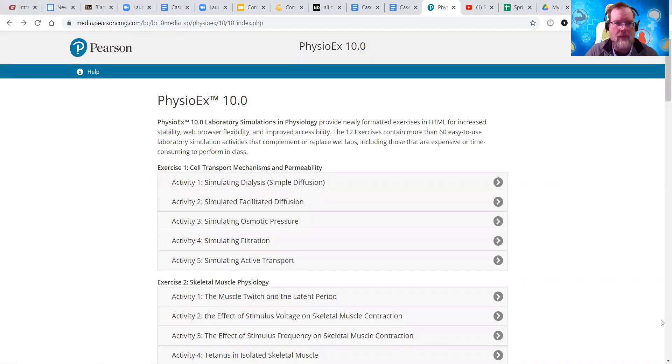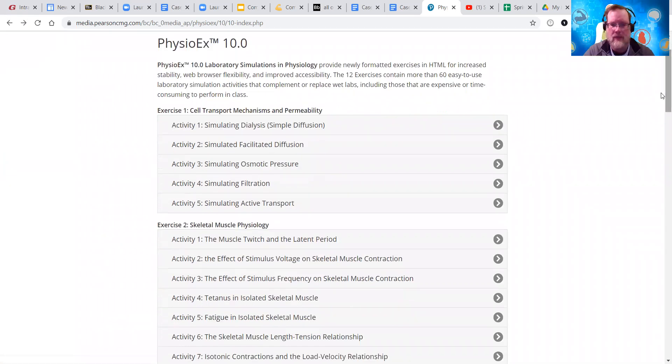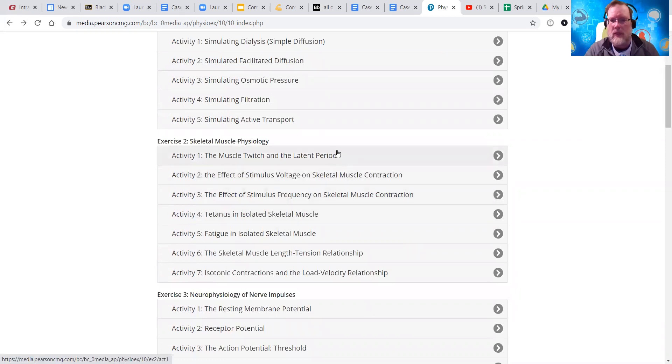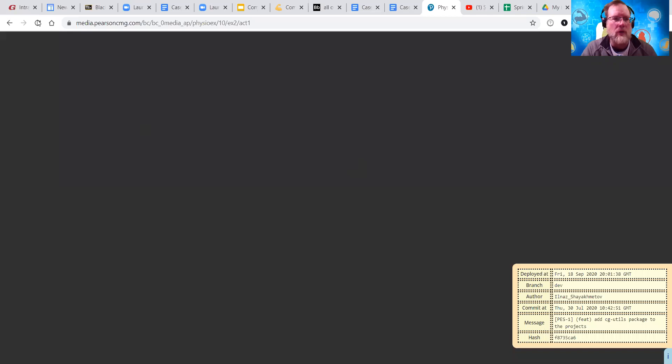Okay, for this next PhysioX, we're going to do Exercise 2, Skeletal Muscle Physiology. Activity one is this video. That's the required assignment. And again, you can do, and I certainly encourage you to do any of the other activities. There are several to choose from, but activity one is the one we're going to do.